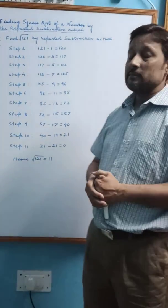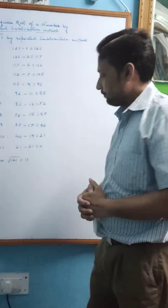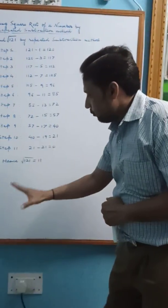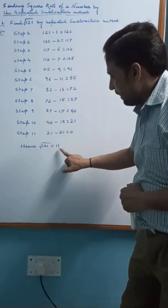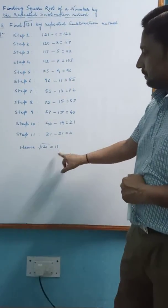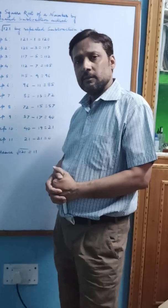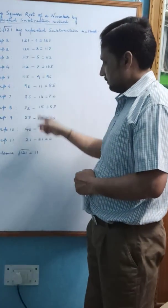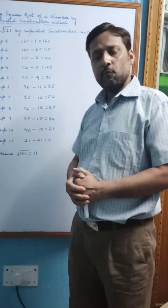It means our answer is 11. The square root of 121 is 11. I hope you understand it very clearly.